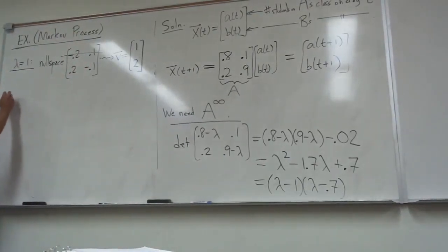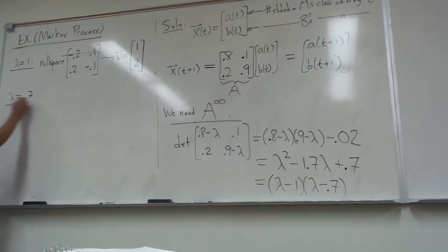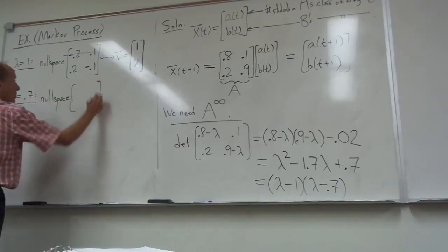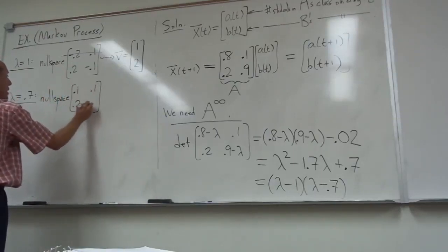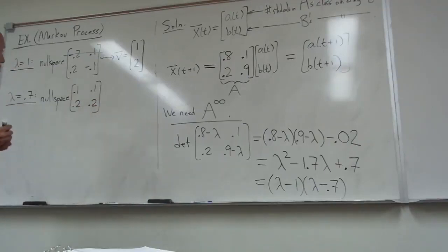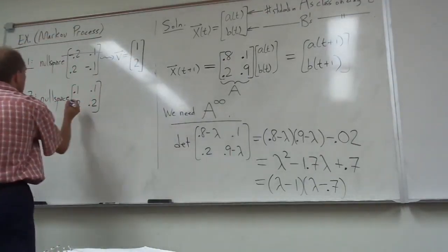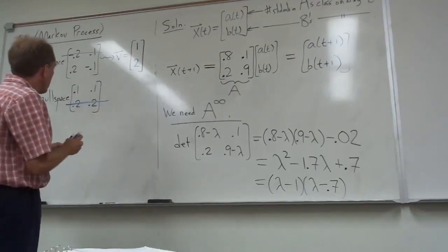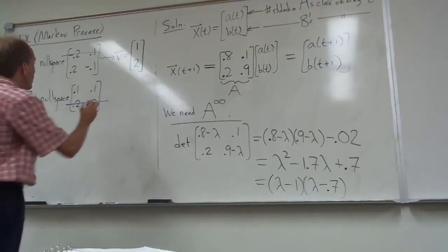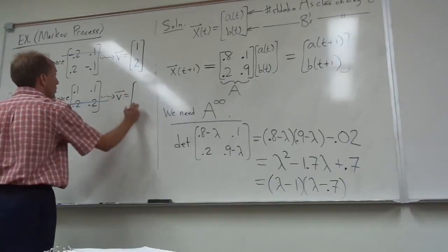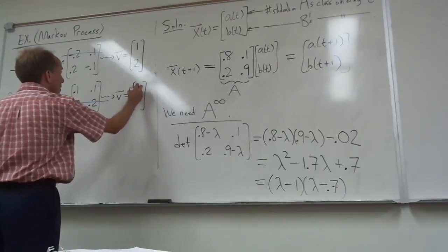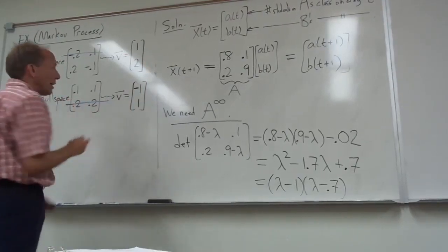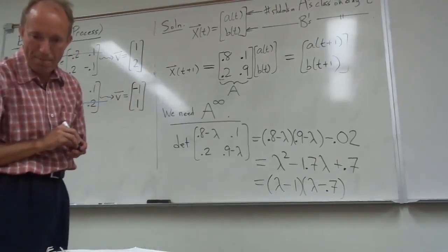We have another eigenvalue, which was 0.7. For that one, I have to take the null space of the matrix I get by subtracting 0.7 from the main diagonal of the matrix. This is what I'll get. I need to cross off any row I want. I'll cross off the second row. And I'm going to do the same thing. I'm going to do the trick where I swap the entries, and I'm going to multiply through by 10. And I have to put a minus sign on one of them, and I'll just put the minus sign on the first entry.